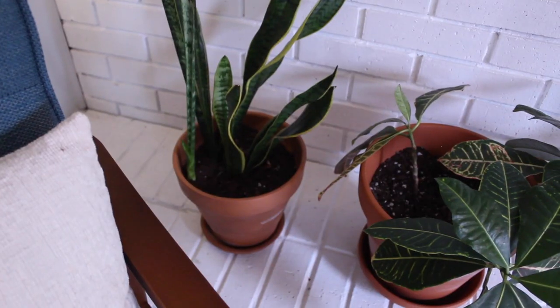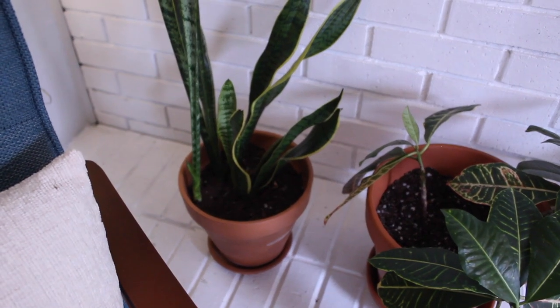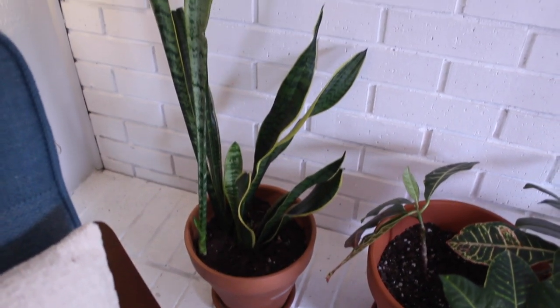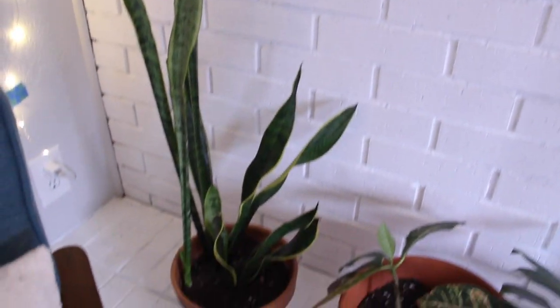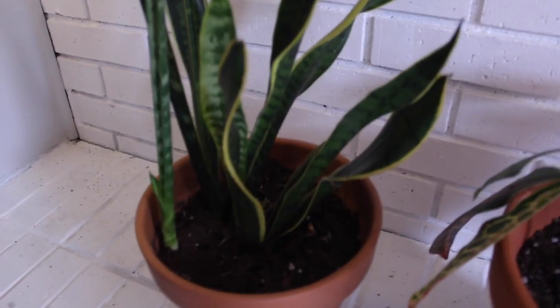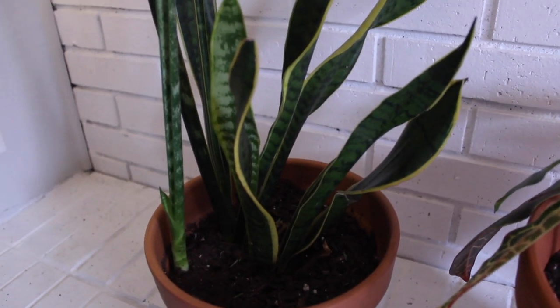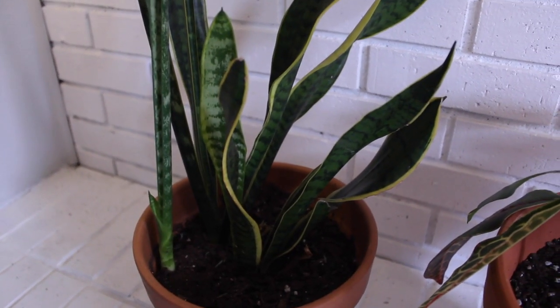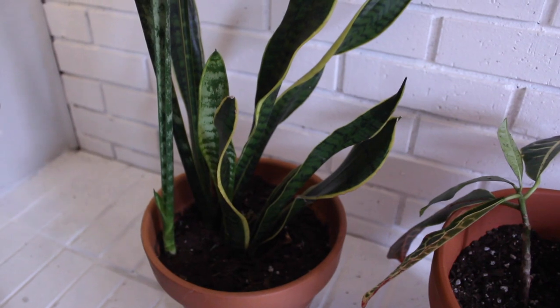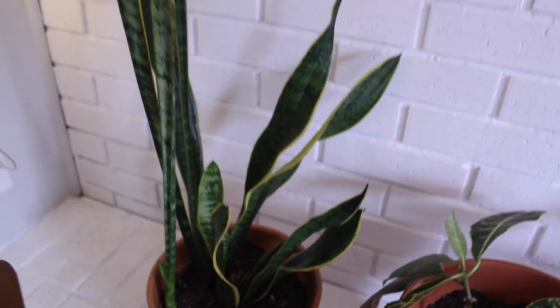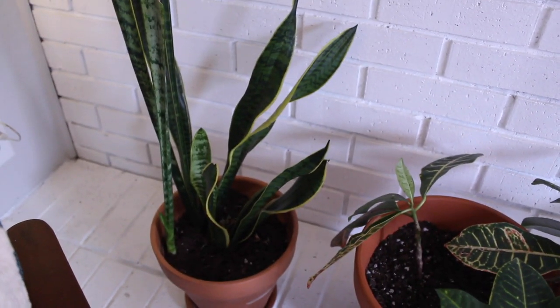Behind that I have a sansevieria, or snake plant, or mother-in-law's tongue - it has many names. It has some beautiful variegation. This is one of I think three snake plants I have. They're just such an easy to care for plant, and this one has grown a lot since it has been in more direct sunlight than my other two.